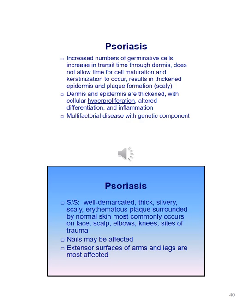Signs and symptoms of psoriasis include well-demarcated skin that is thick, silvery, scaly, and erythematous plaque surrounded by normal skin. It most commonly occurs on the face, scalp, elbows, knees, and sites of trauma. Sometimes the nails are affected; the extensor surfaces of the arms and legs are most affected.